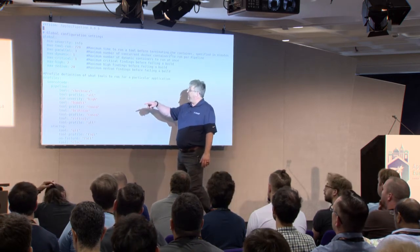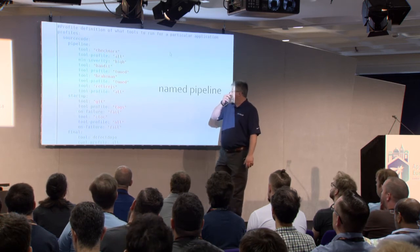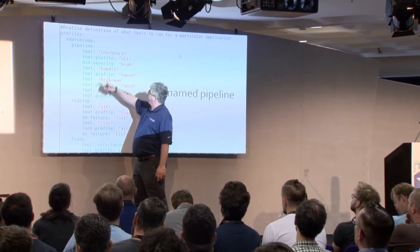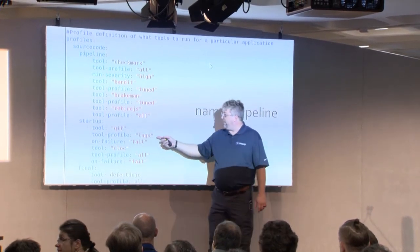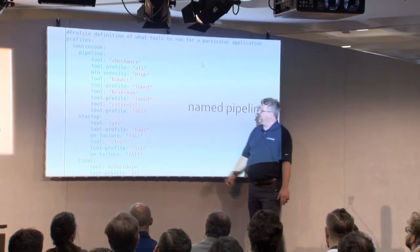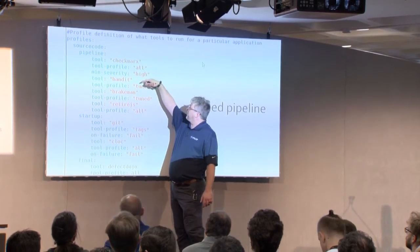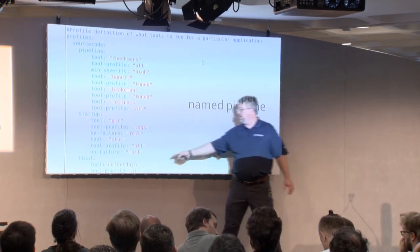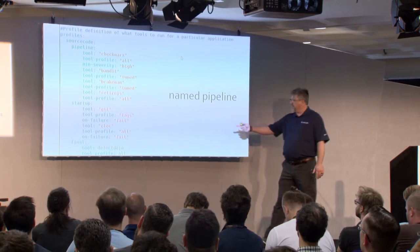Here's an example of config.yaml — the global config to define a named pipeline. Here's a named source code pipeline. Startup happens first, then pipeline, then final. At startup we run git, pull off a particular tag, and on fail we stop — if it fails to pull the git repo, we don't need to run the other tests. If it works, we run cloc to find out what we have, then run the pipeline: Checkmarx for almost anything, Bandit for Python, Brakeman for Ruby, and RetireJS for JS. When done, all results get dropped into a known location — /opt/appsec-pipeline/results — and get shoved into DefectDojo.